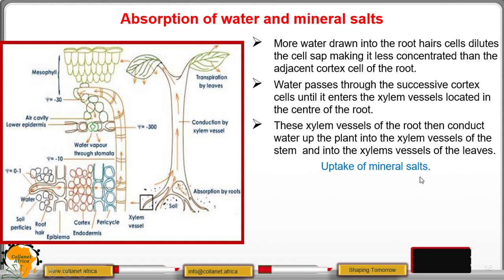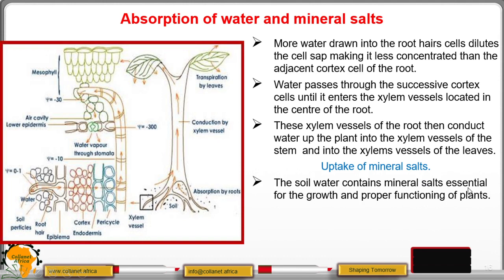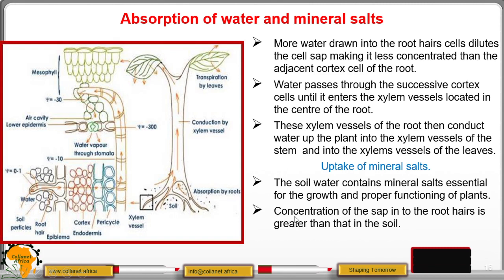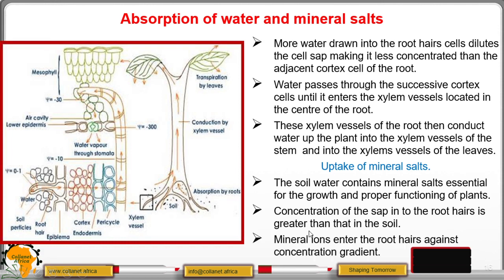We now move to the uptake of mineral salts. The soil water contains mineral salts which are essential for growth and proper functioning of plants. The concentration of the sap in the root hairs is greater than that in the soil. This means mineral ions will enter the root hairs against a concentration gradient — the cell sap has a higher concentration of solutes or mineral ions than the soil. So mineral salts enter the root against a concentration gradient.